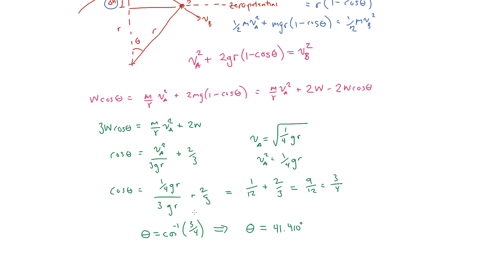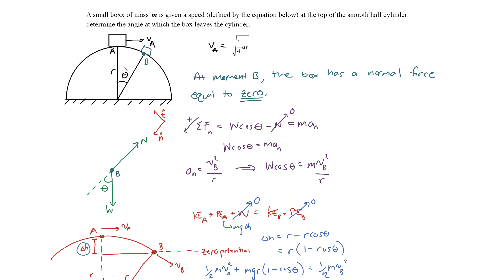So right when the box loses contact with the surface, theta is 41.41 degrees — roughly 41 degrees. This may seem counterintuitive since many people might assume it's close to 45 degrees, but doing the physics gives us 41 degrees. The concept is straightforward: sum the forces in the normal direction, apply the condition N=0 at separation, then use the work-energy equation to relate velocities and find the angle.